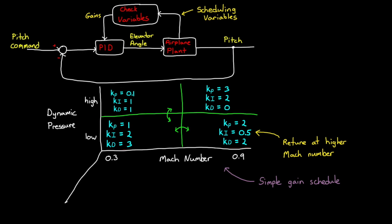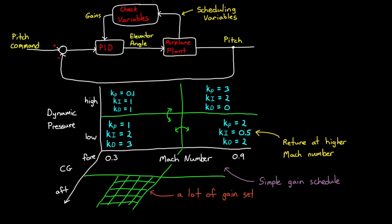We could add a third scheduling variable, CG location, and then make a three-dimensional map. And we could add a fourth dimension with angle of attack, and so on. You can see how quickly the variable matrix grows, and this is one of the drawbacks of gain scheduling. You want to divide up the operating envelope enough to get good performance everywhere, but not so much that you have a monumental task of tuning ahead of you. Another drawback of really large gain matrices is that you have to store them, and then efficiently search for the controller values within them.